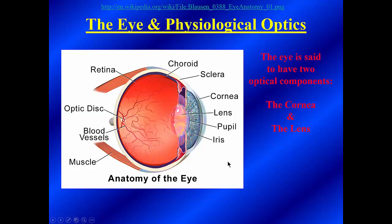Hello! Welcome to Vision and Hearing. Let's begin with a diagram of the human eye. The eye is said to have two optical components, the cornea and the lens. Here we see the cornea, and a little bit posterior to that we have the lens. Critically, the retina is going to be all the way in the back of the eye, and we'll be talking in a few minutes about the optic disc, which sets up a very interesting psychological phenomenon known as the blind spot. But here's the anatomy of the eye in broad stroke.